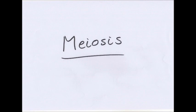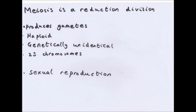Hello and welcome to my next video on meiosis. Meiosis is a reduction division. The resulting daughter cells have half the original number of chromosomes, they are haploid and can be used for sexual reproduction.